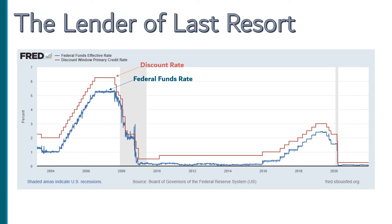Back in 1913, this was the primary tool the Fed had in staving off a financial crisis. By setting the required reserve ratio, they were instilling confidence in the system that would hopefully make panics less likely to occur.